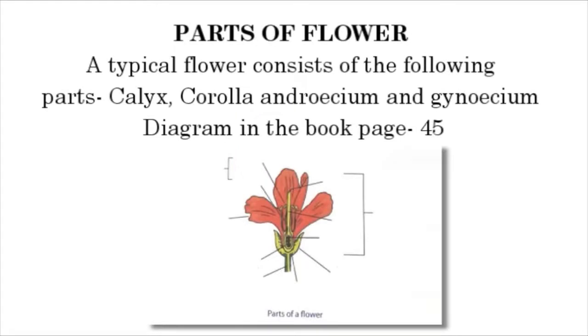Parts of a flower. A typical flower consists of the following parts: Calyx, Corolla, Androecium and Gynoecium.